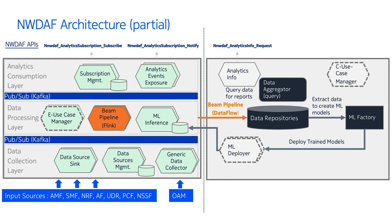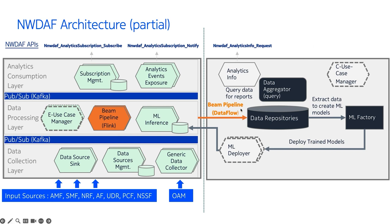Here is a very high-level architecture of NWDAF. We have two parts of the implementation. On the left side you can see the edge, and on the right side you can see the central. The edge is responsible for data collection, processing, and notifications from NWDAF and for other network functions. The central is used for the central data repositories, machine learning model training, and we have the data flow pipelines. The central is currently running on GCP.